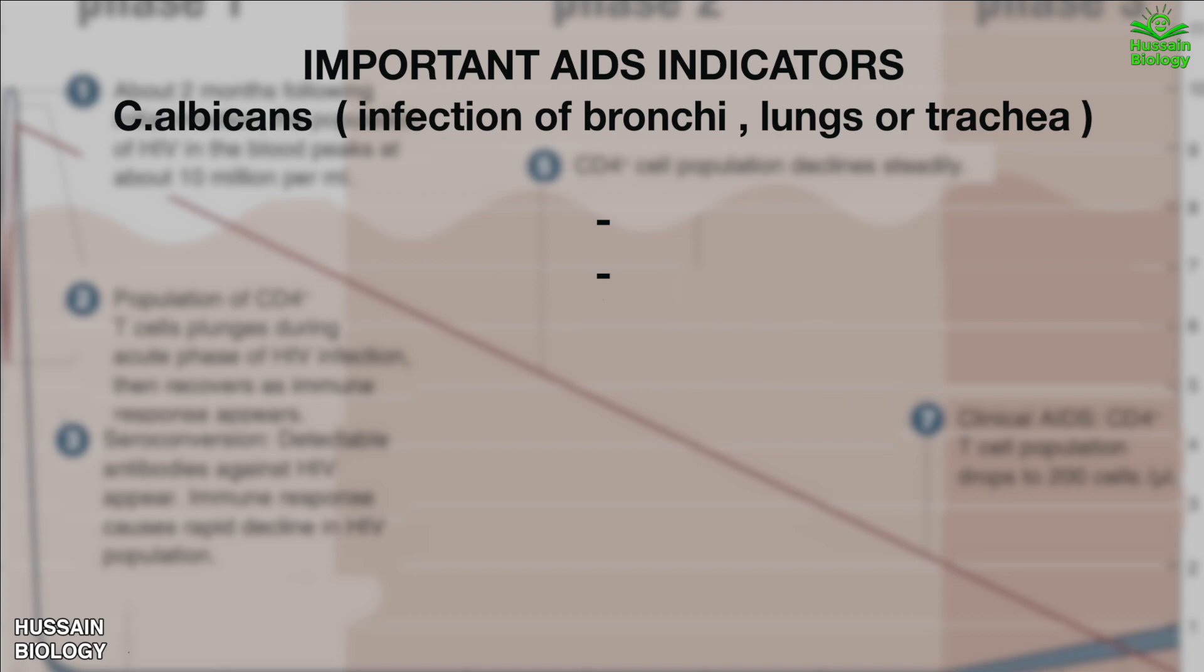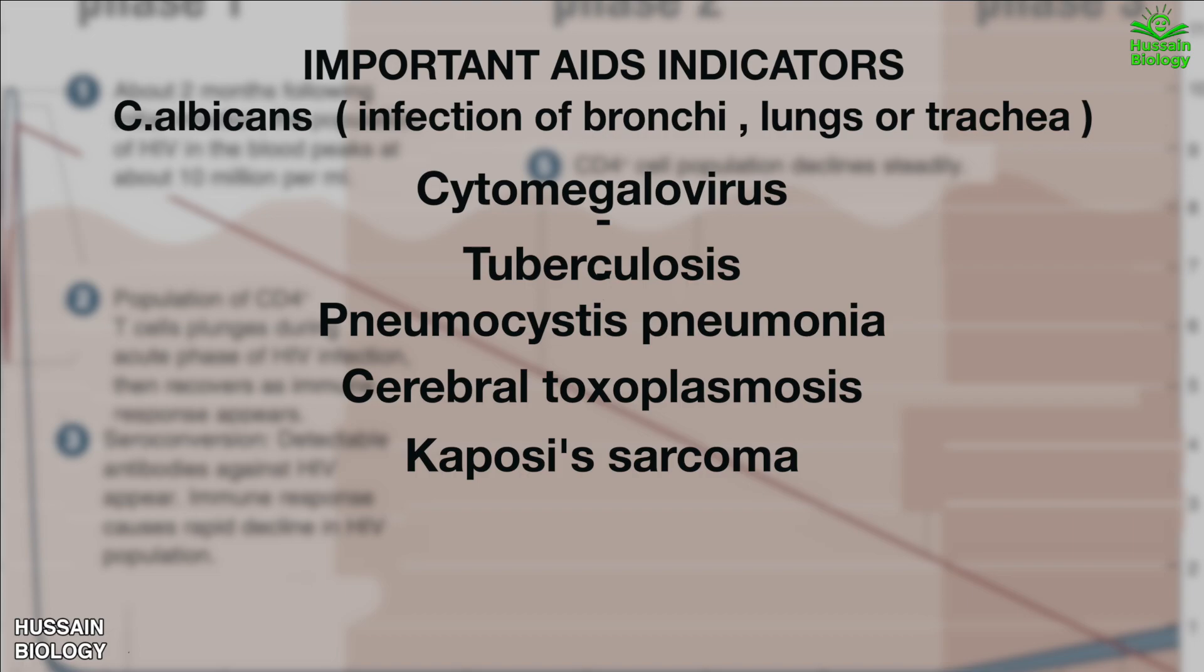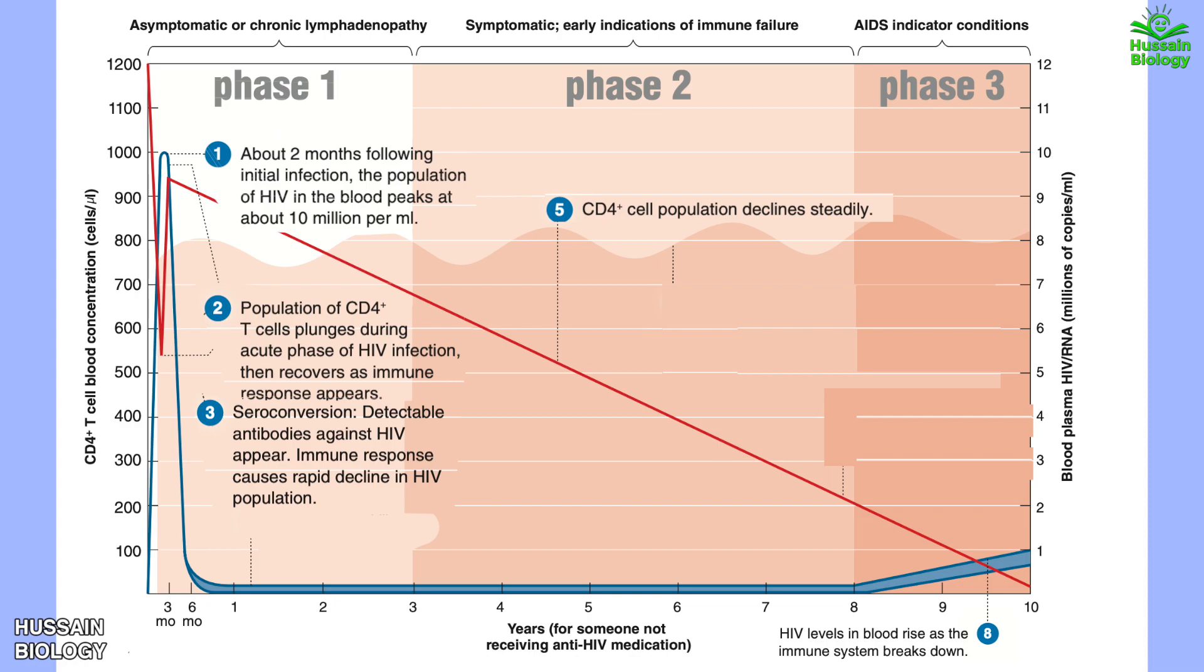Other important AIDS indicator conditions include cytomegalovirus eye infections, tuberculosis, pneumocystis pneumonia, toxoplasmosis of the brain, and Kaposi's sarcoma. This is how HIV infection proceeds and the emergence of AIDS gradually.